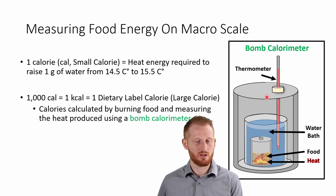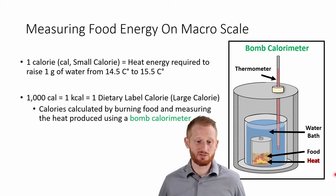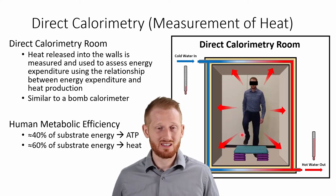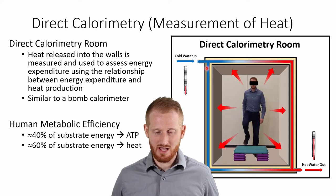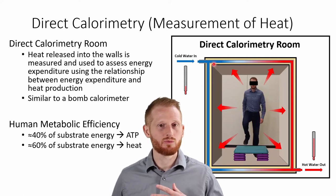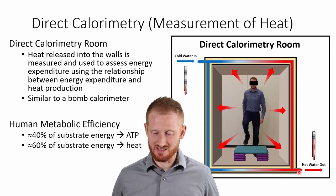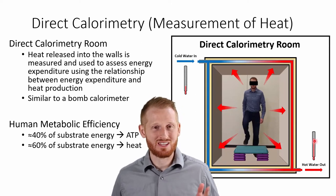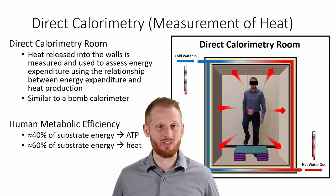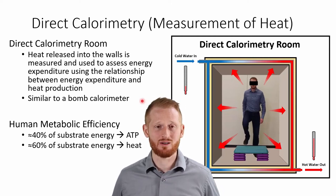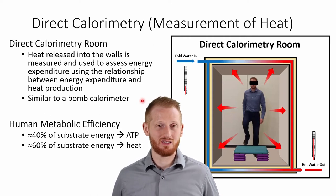We can do a fairly similar approach to measure the energy expended from a person in something called direct calorimetry. In a direct calorimetry room, similar to the bomb calorimeter, a person may be sitting, watching television, or exercising. In the walls of the room are pipes filled with water, and we measure how much heat is in the water going in versus coming out to determine the temperature change caused by the person inside.